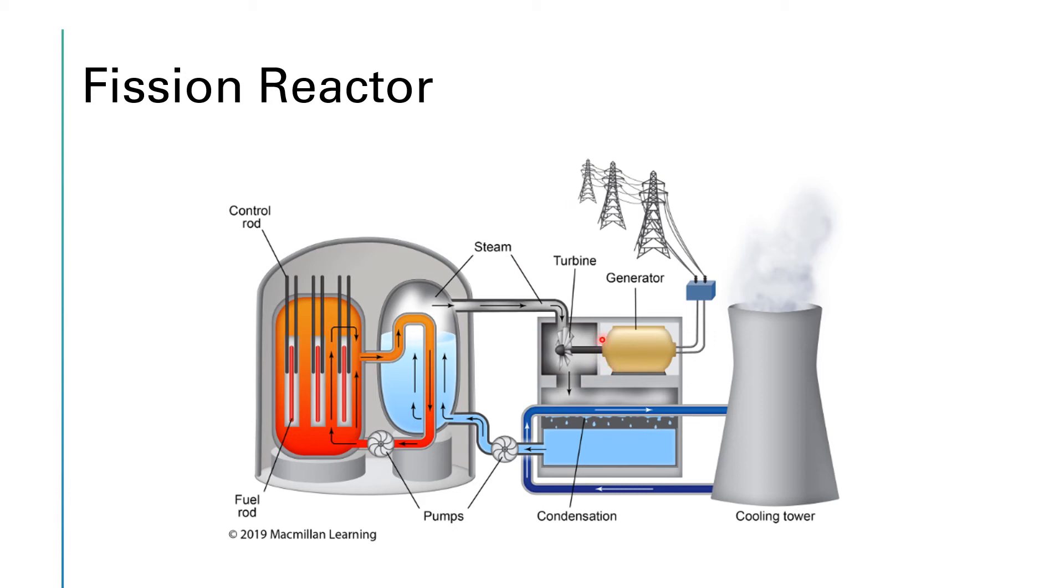Now in a fission reaction, the thing that's different is how the steam is generated. We have what are called fuel rods and control rods. The control rods are interwoven with the fuel rods and they can be pulled up to allow one fuel rod more access to another fuel rod, or they can be pushed down in this diagram to isolate the fuel rods from one another. So the more they are pulled out, the more likely a neutron is to find another uranium atom and so the more critical the chain reaction gets.